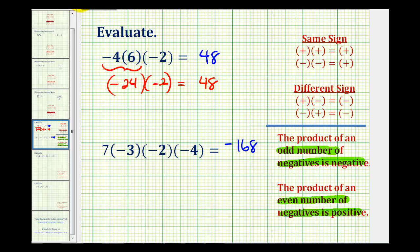And again, just to compare, positive 7 times negative 3 would be negative 21. And then negative 21 times negative 2 would be positive 42.